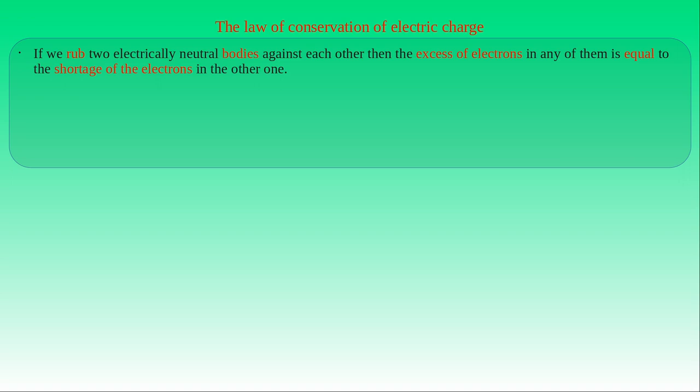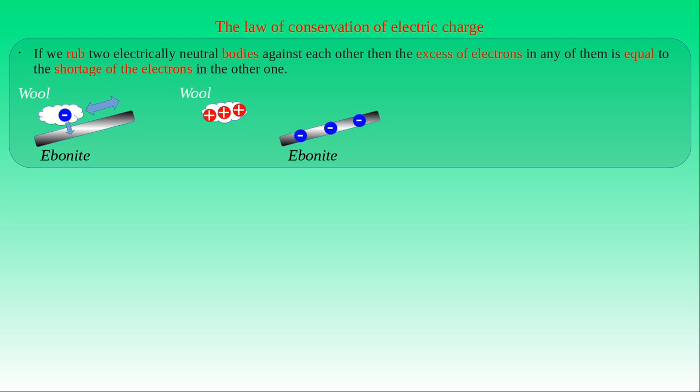The experiments presented here also demonstrate the conservation of electric charge. If we rub electrically neutral bodies against each other, the excess of electrons in any one of these bodies is equal to the shortage of electrons in the other — that is, the induced charges in both bodies are equal to each other. For example, if we rub an electrically neutral ebonite rod with wool, free electrons move from the wool into the ebonite rod. If we remove the wool, the wool attains positive charge and the ebonite rod attains negative charge. If we then touch the charged ebonite rod with the charged wool, they become electrically neutral again, demonstrating that the wool and the ebonite rod have the same amount of induced charge.